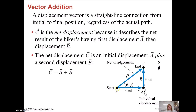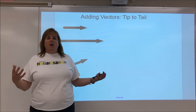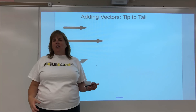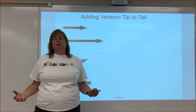For example, here someone walked from point P to Q — 4 miles in the horizontal direction — and then walked another 3 miles north, ending up at point S. The distance would be 4 plus 3 because it's the total path taken. But the displacement is the final spot minus the initial spot, and we need trigonometry to figure that out. This is just the hypotenuse of a right triangle. If you know anything about triangles, this is a 3-4-5 triangle, so the displacement would be 5 miles. This video is about how to break vectors into components and solve for them.